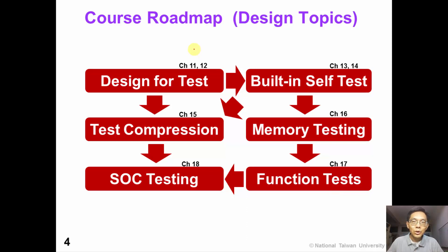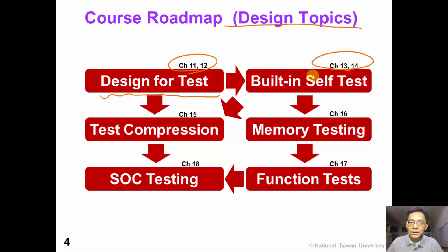This slide shows our course roadmap in the design-related topics. In chapters eleven and twelve, we will introduce the concept of design for testability, or DFT. With the DFT concept, we can move on to the concept of built-in self-test in chapters thirteen and fourteen. And then with DFT and built-in self-test, we can move on to test compression.